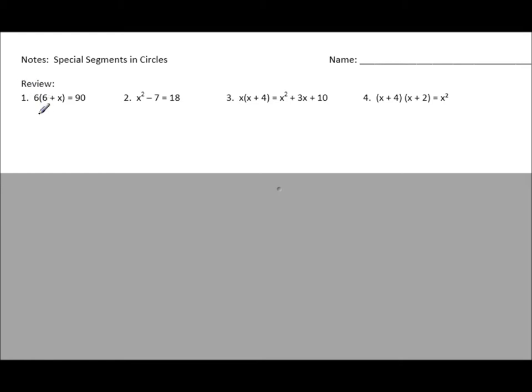The first one is going to be using the distributive property. So whenever you have a set of parentheses, that's a quantity. And you want to multiply whatever's outside the quantity evenly to each number inside the quantity. So here you would take 6 times 6, which is 36, and 6 times a positive x, which is 6x, and you're done with the distributive property.